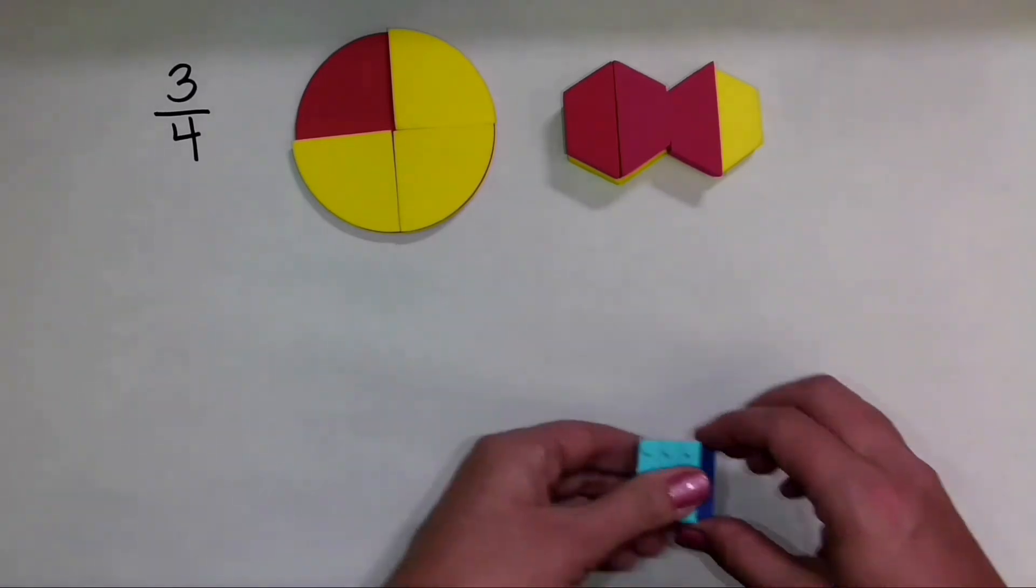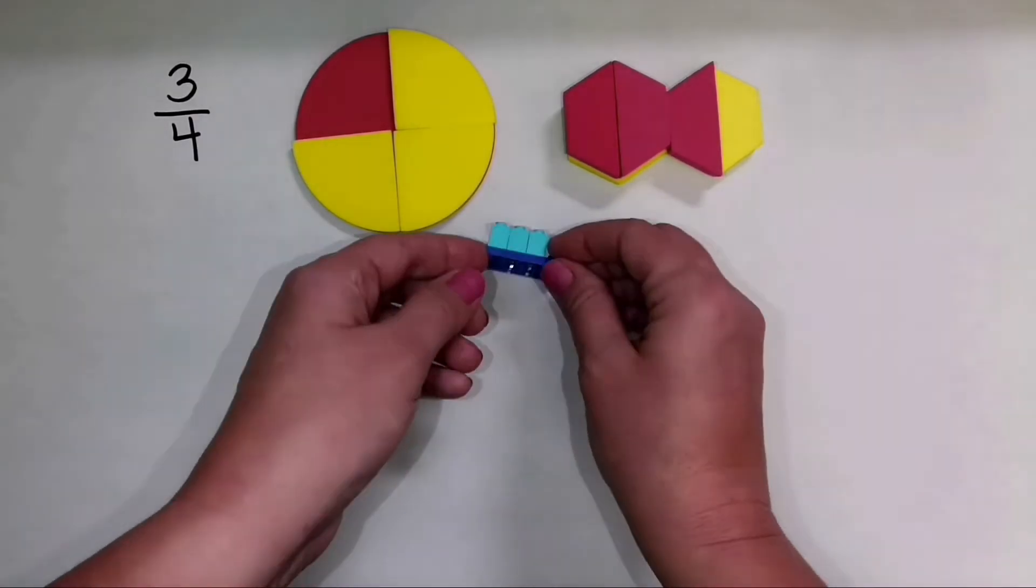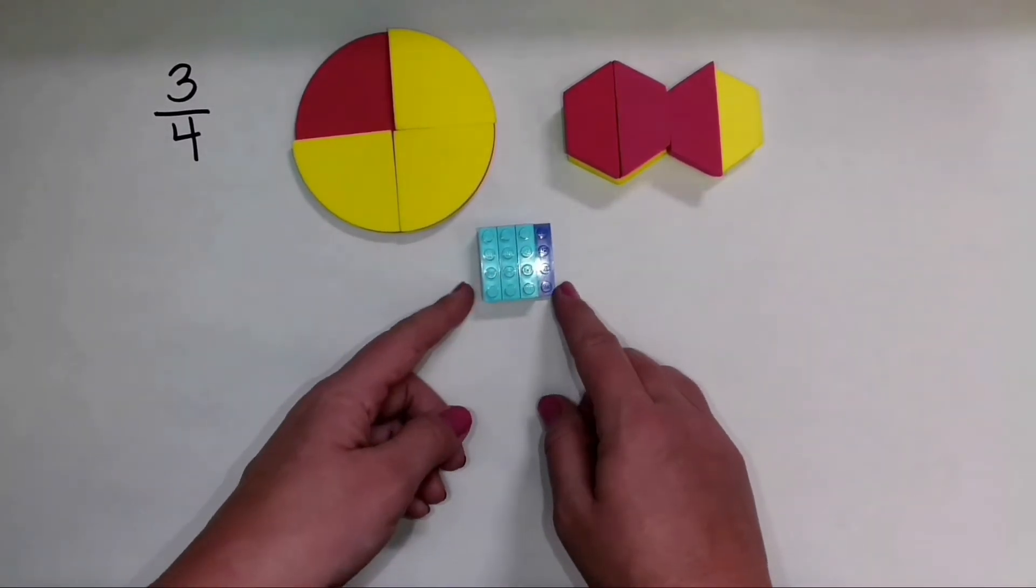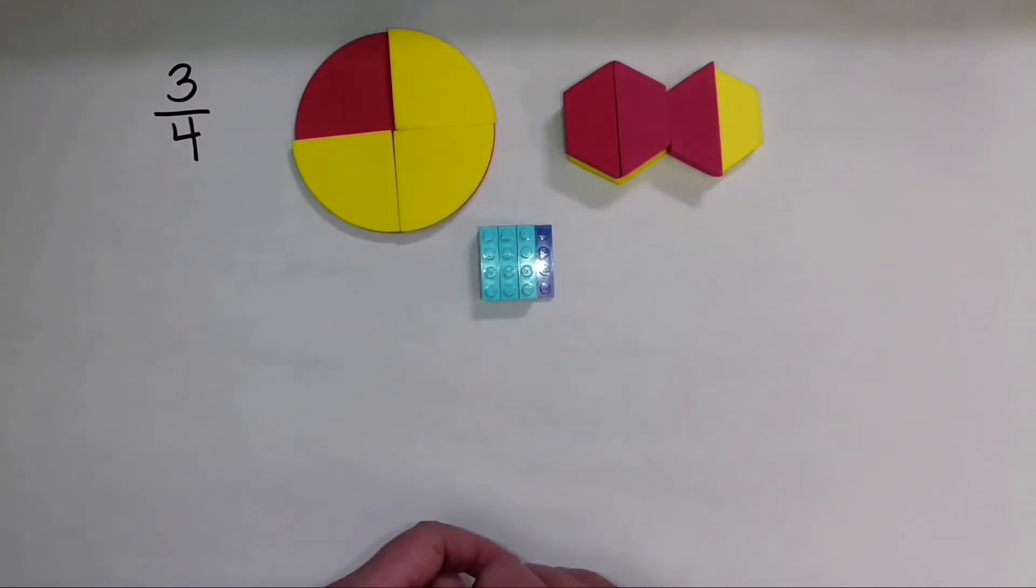I can also do 3 fourths with something like Legos. So here is an area, and I'm going to show one, two, three of the four parts of that area with the turquoise Legos.